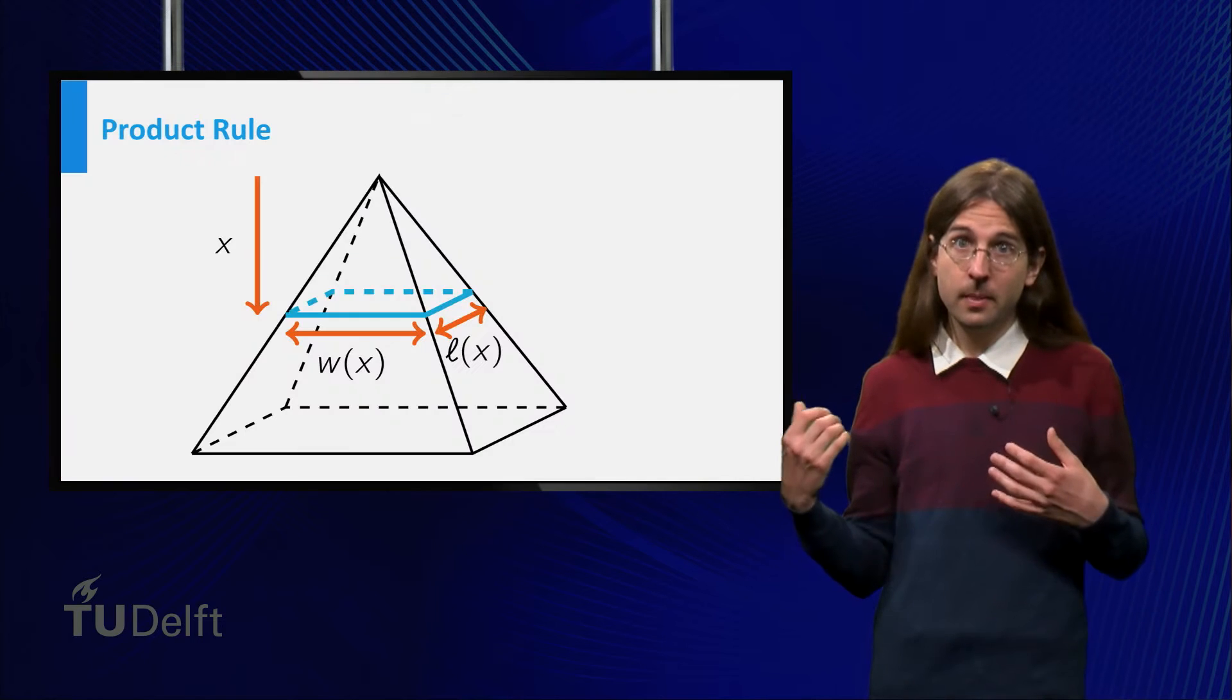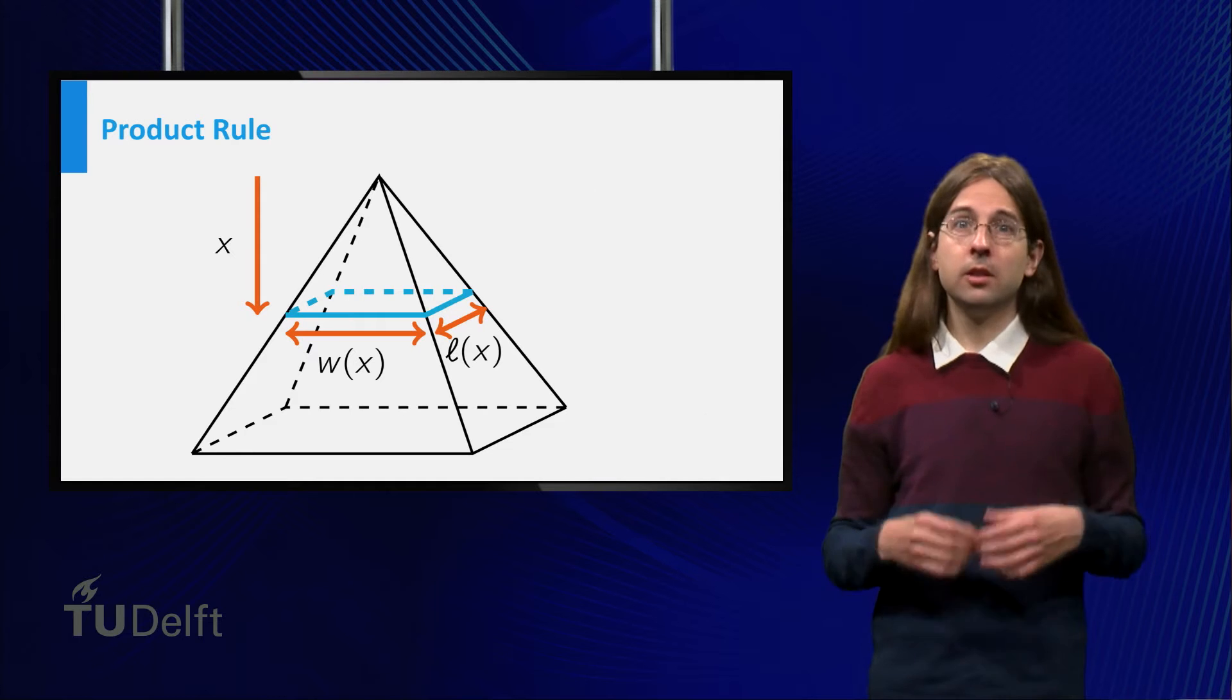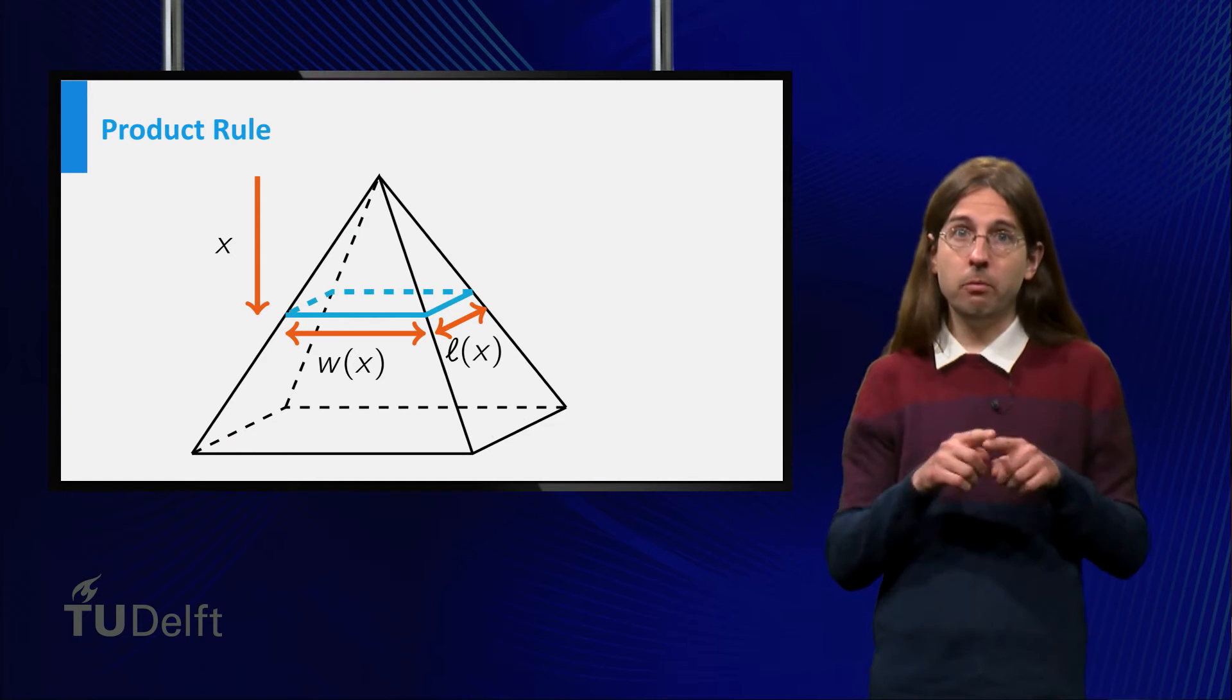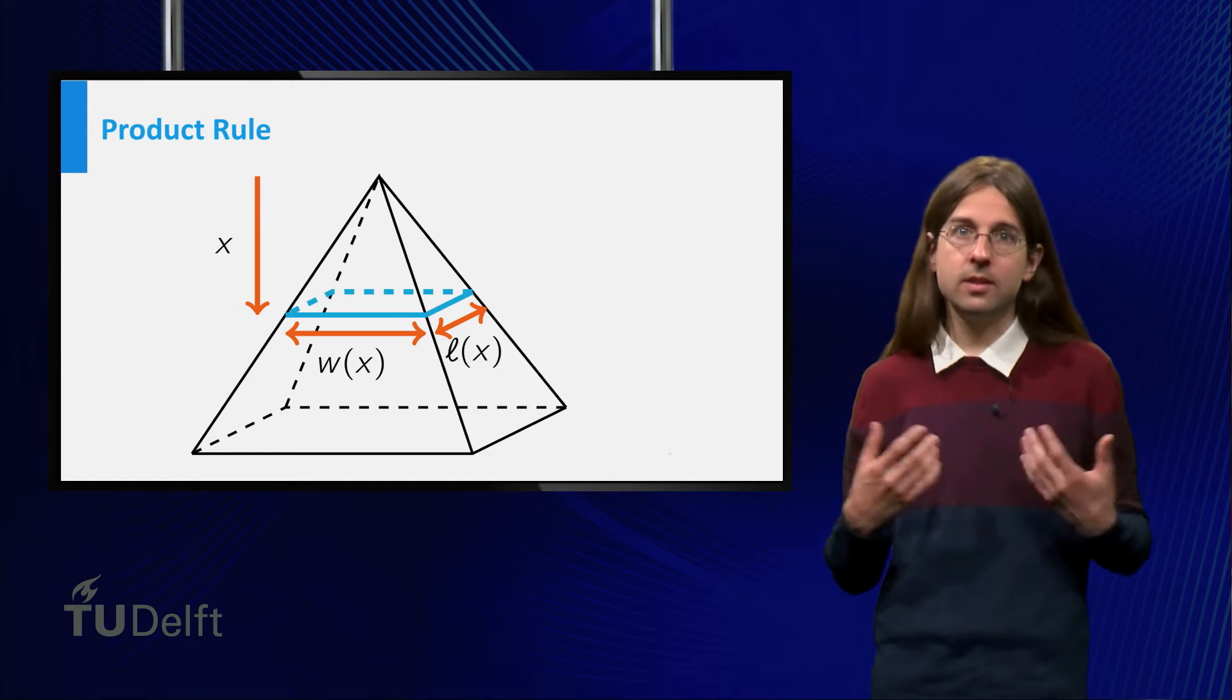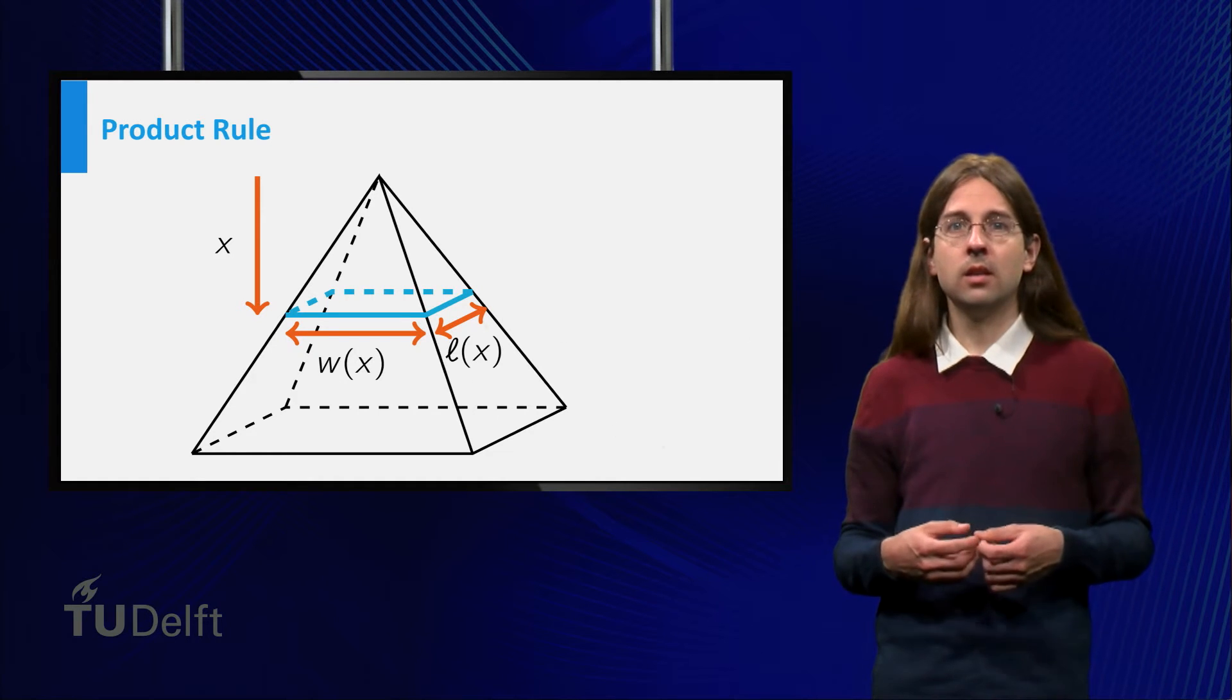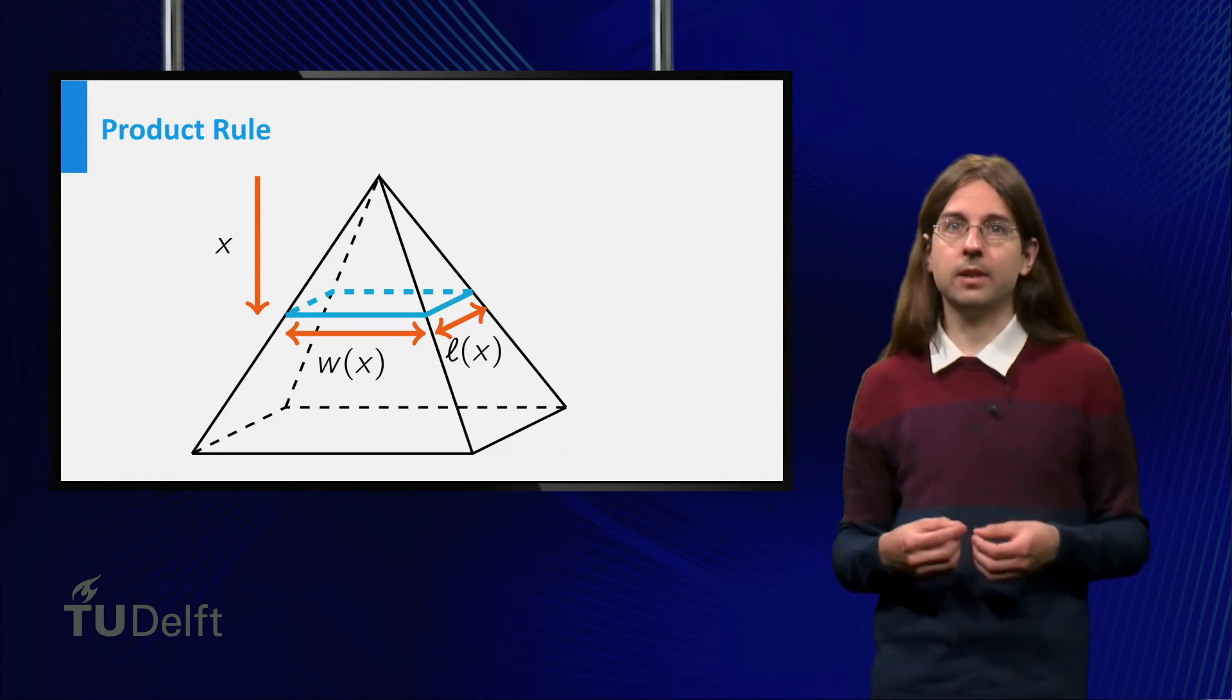Consider a pyramid. If we take a cross-section at a distance x from the top, we obtain a rectangle, with width w(x) and length l(x), depending on this distance x. The area of the rectangle is the product w(x) times l(x).